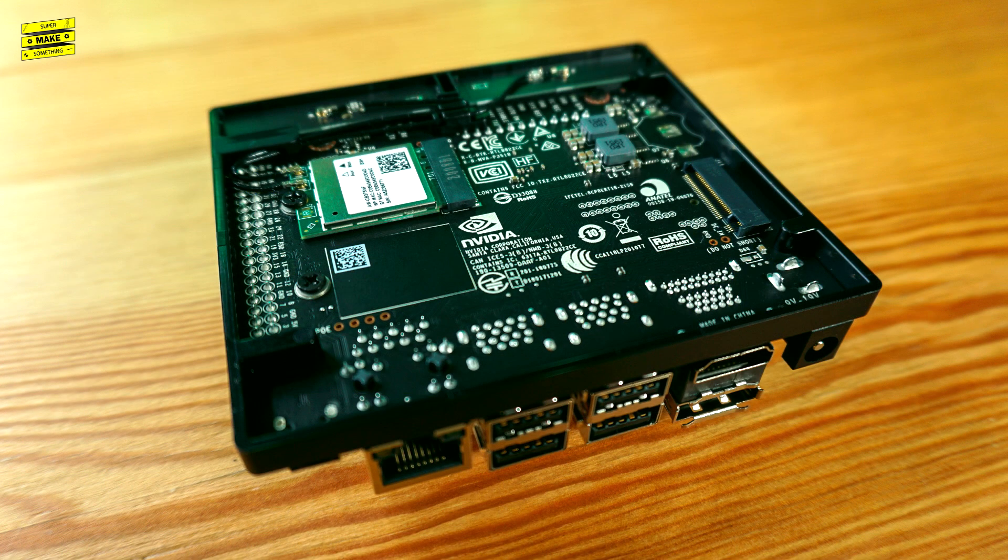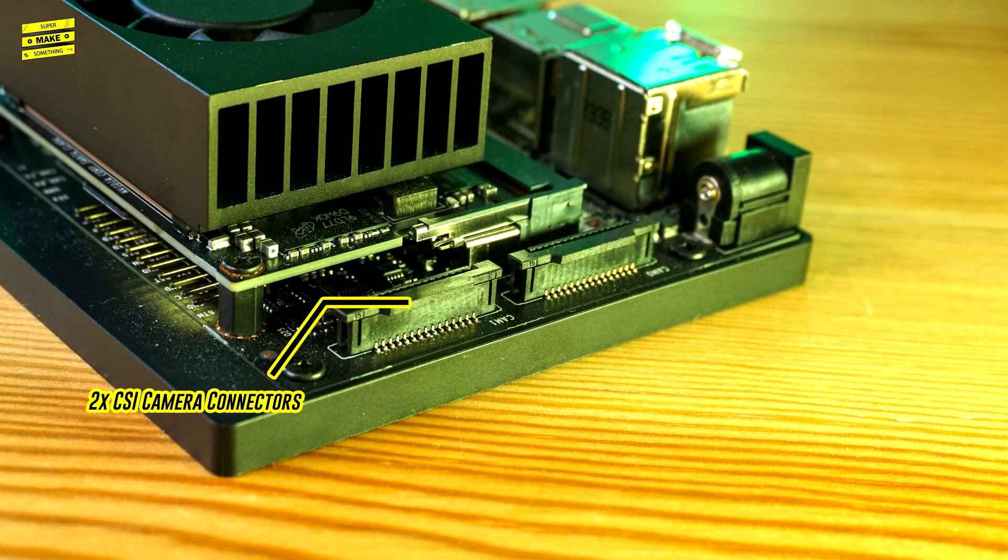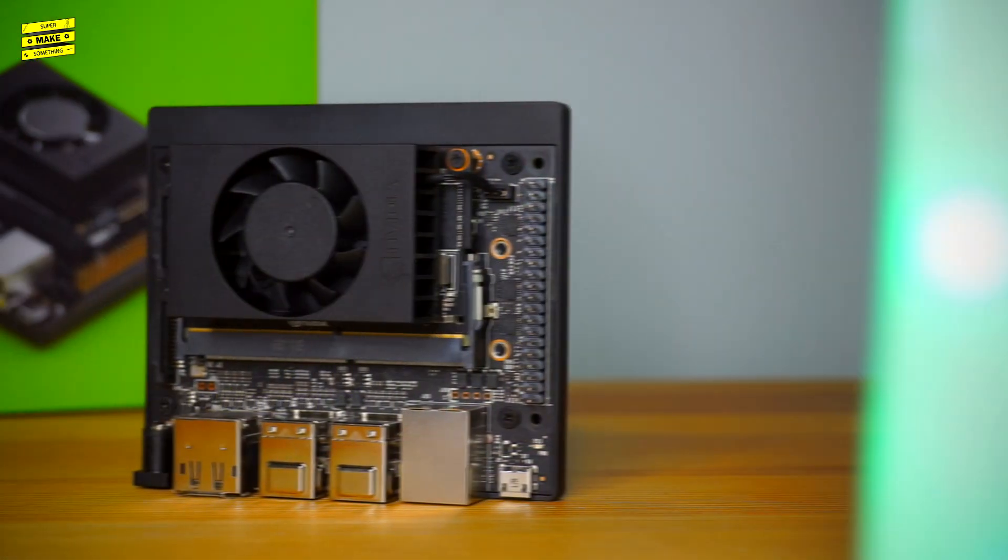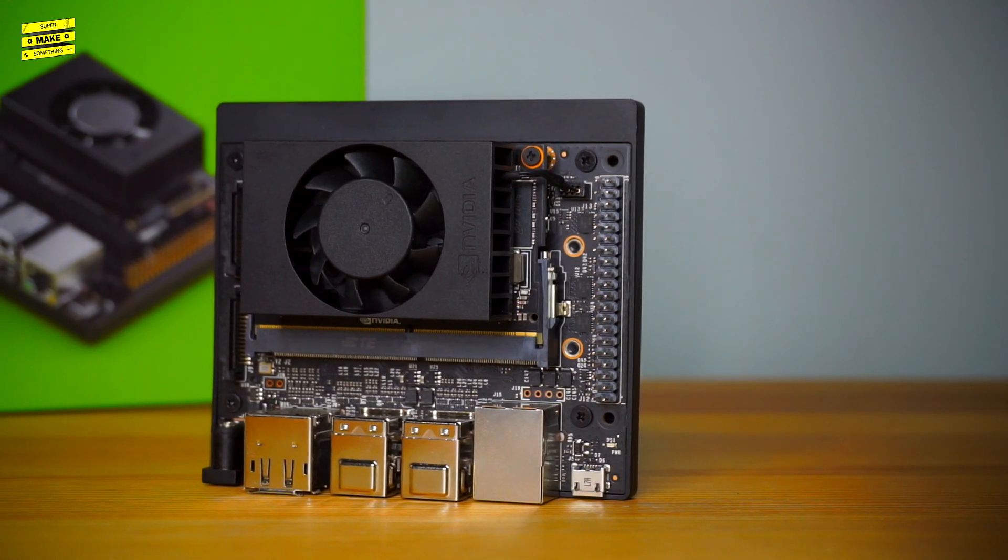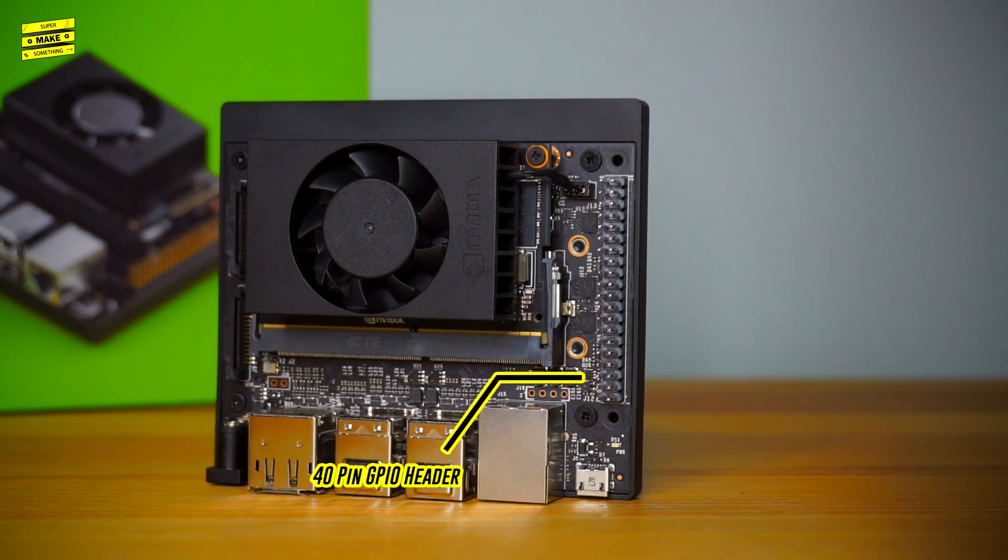The carrier board also contains a slot to install an M.2 NVMe solid-state drive, two CSI camera connectors, and a 40-pin GPIO header that is compatible with the layout of both the Jetson Nano and Raspberry Pi, making it perfect for maker projects that require an extra dose of computation.